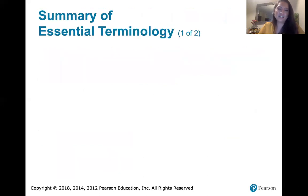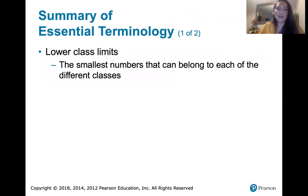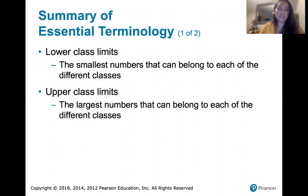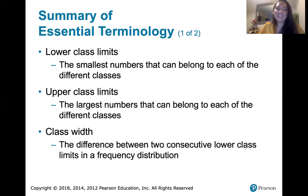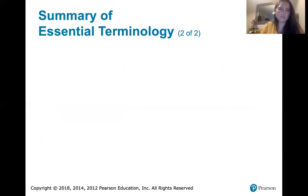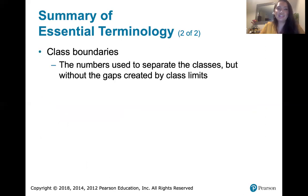Let's quickly review the essential terminology. Lower class limits are the smallest numbers that can belong to each class — the number on the left. Upper class limits are the largest numbers that can belong to each class — the number on the right. Class width is the difference between two consecutive lower class limits — don't subtract upper and lower limits of the same class; use consecutive classes. Class boundaries are the numbers used to separate classes without the gaps: add the upper class limit of one class and the lower class limit of the next, then divide by two.